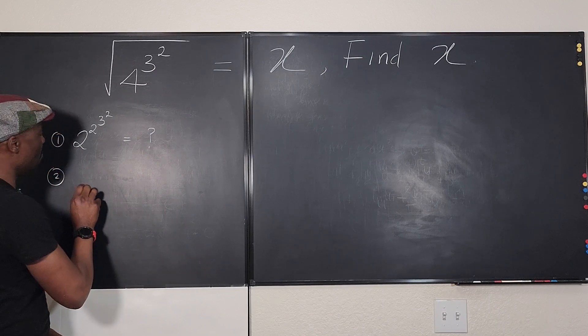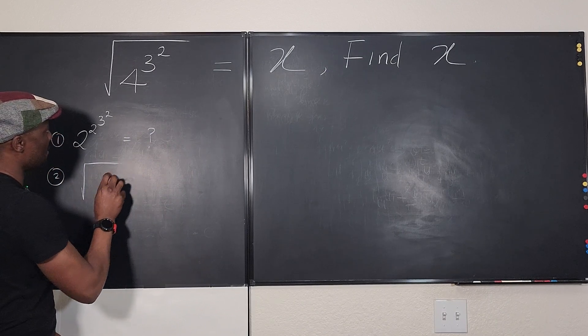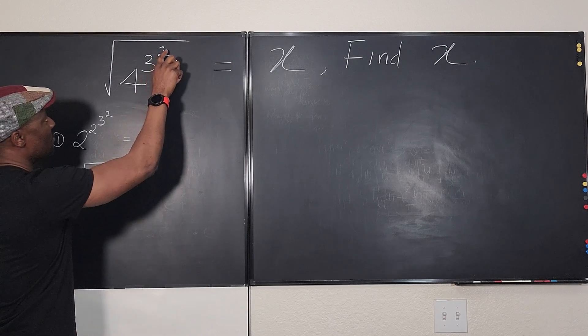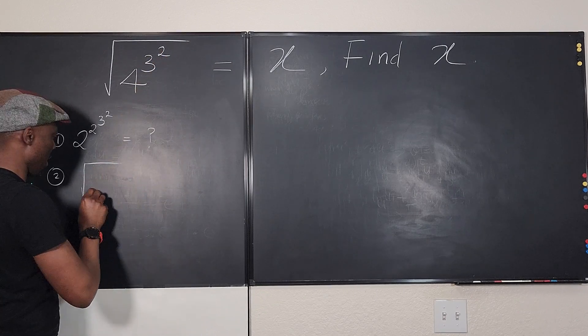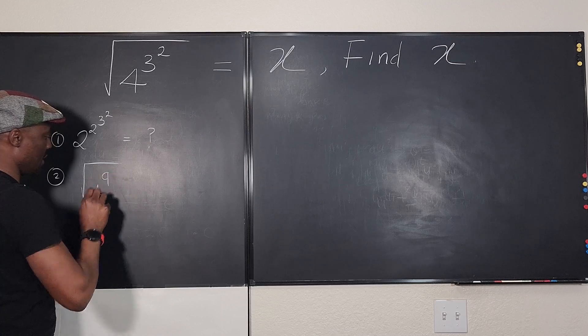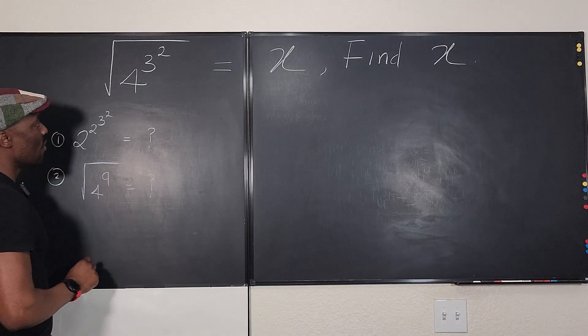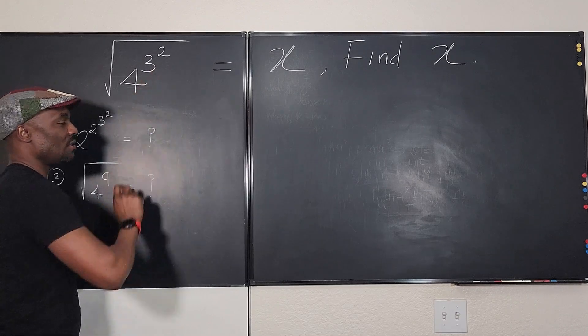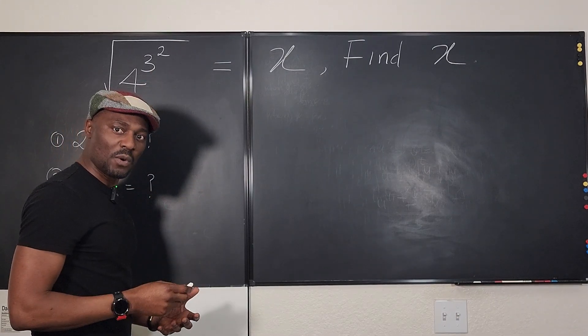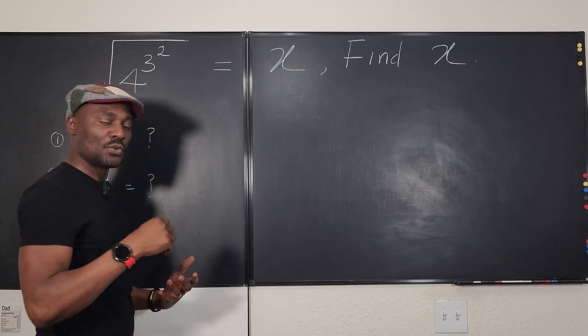Option two, this could be the square root of 4 raised to power. What is 3 raised to power 2? That's 9. 4 raised to power 9. Is this an option? What if it is 4 raised to power 3? 4 raised to power 3 is 64. 64 squared.